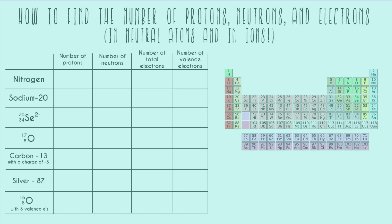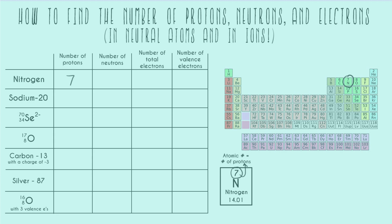If we start with nitrogen on our grid, the first thing we do is find that element on the periodic table. We can find nitrogen towards the top right, right here. If we zoom in on just the square of nitrogen, we'd see something like this. We usually have four pieces of information, and the number on top is our atomic number. The atomic number is equal to the number of protons, so nitrogen has seven protons.